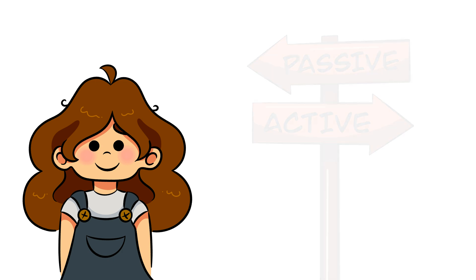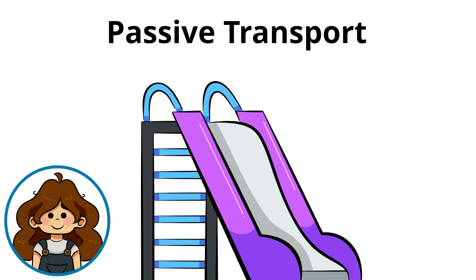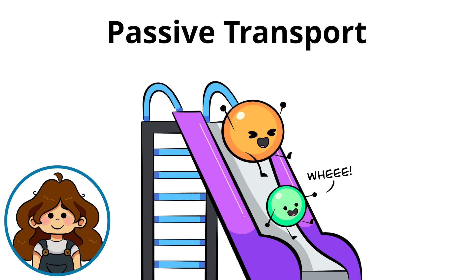That being said, substances can enter and leave the cell in one of two methods: passive transport and active transport. Through passive transport, molecules move with the gradient from high to low concentration, meaning they don't require any energy to do so. There are three types of passive transport.